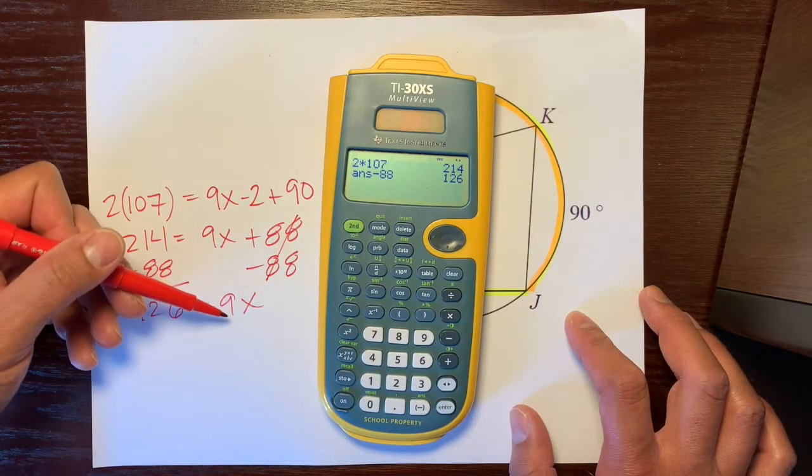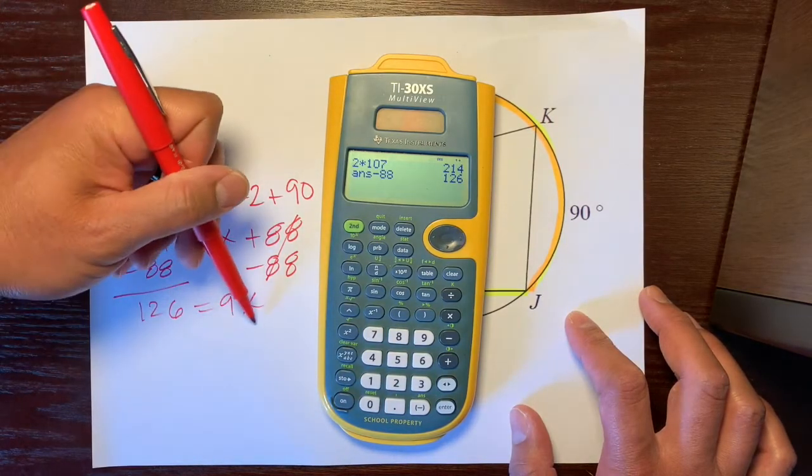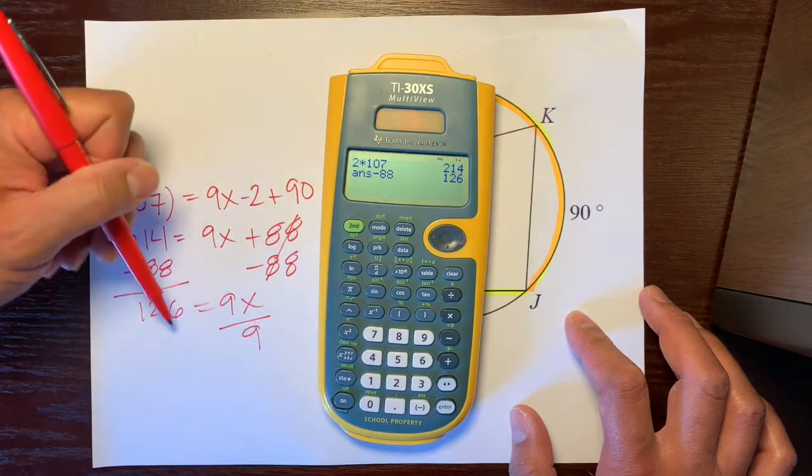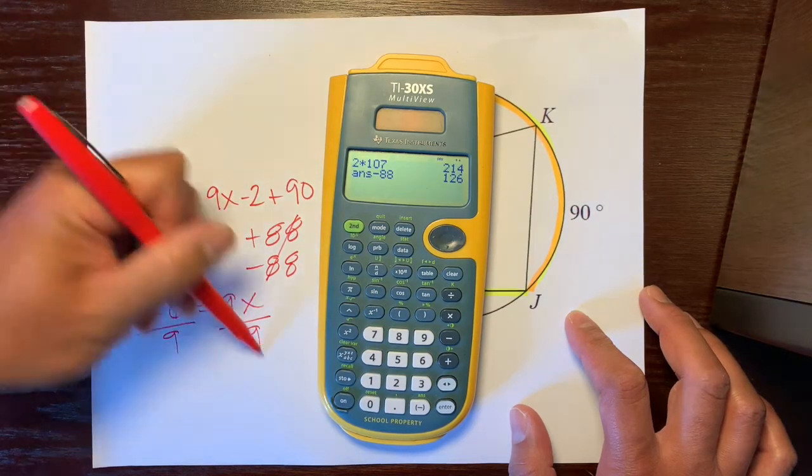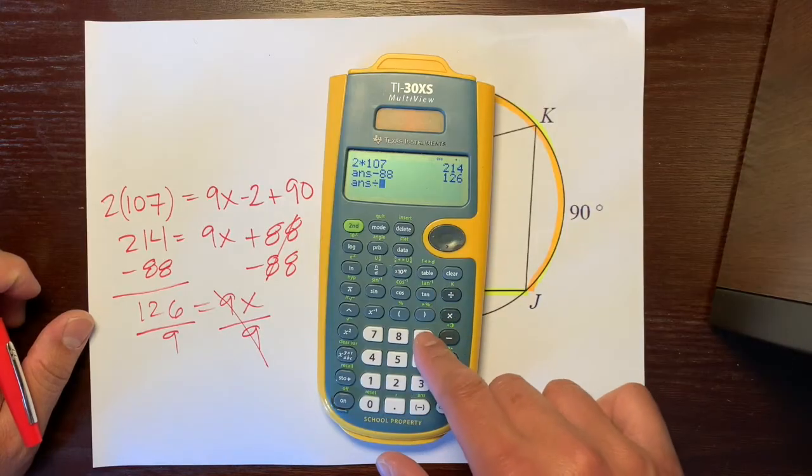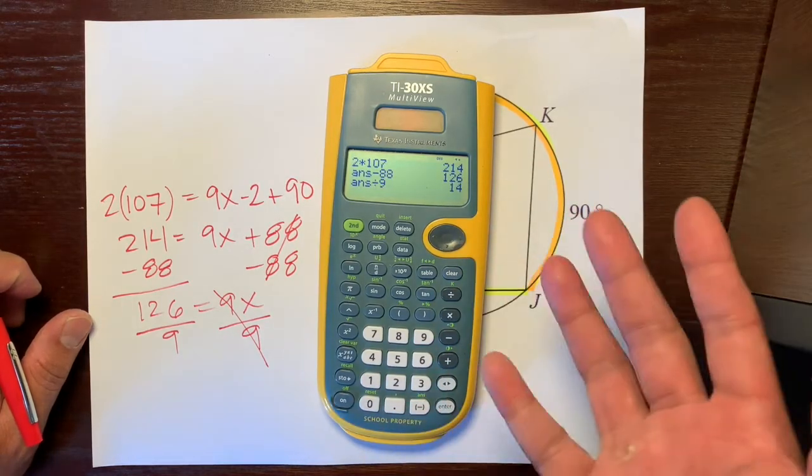And the opposite of multiplication, because this is 9 times x, is division. So we'll divide both sides by 9. These 9s cancel out and let's see if we get a whole number. So divided by 9, which is 14.